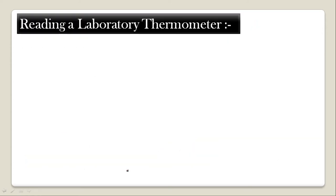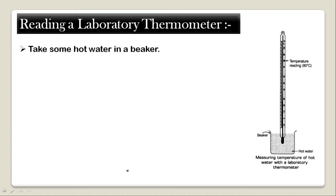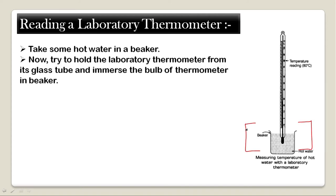We will now learn about reading a laboratory thermometer. The first step is to take some hot water in a beaker. To read the temperature of any substance, we need something in a beaker — so here we have taken hot water in a beaker. The second step is to hold the laboratory thermometer from its glass tube and immerse the bulb of the thermometer in the beaker.